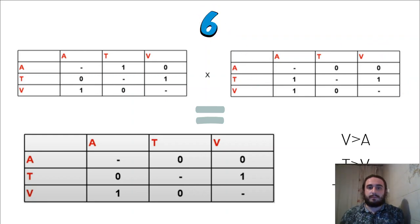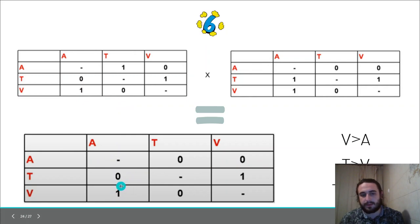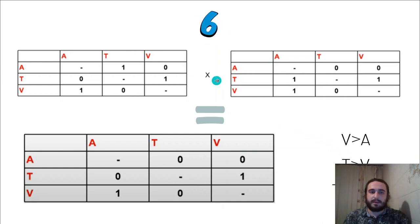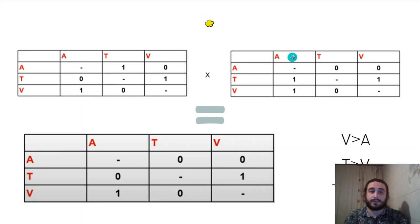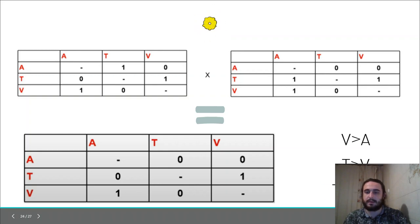We multiply the concordance matrix by the discordance matrix. Every value of 1 in the result means we have an advantage. For example, if A has advantage over B in both concordance and discordance, we can confidently say A outranks B. Both values must be 1 for a definitive advantage. Based on these assumptions we derive the final ranking.